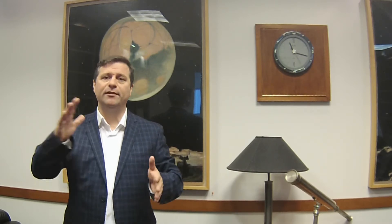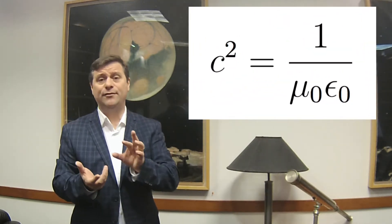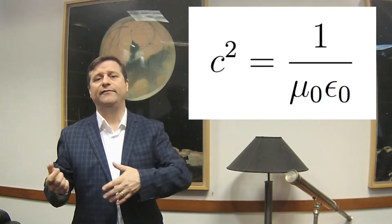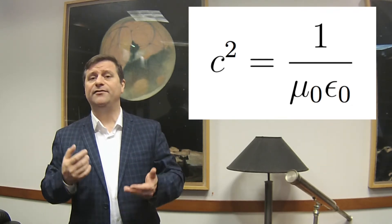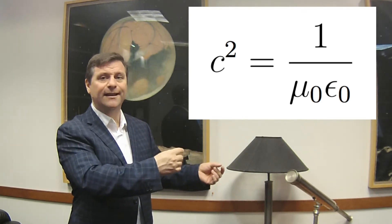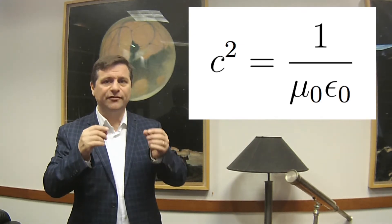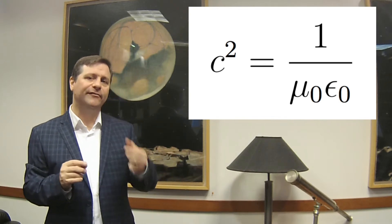These are universal constants, always the same no matter who does the experiment. When Maxwell combined these two constants about the permeability and permittivity of electric and magnetic fields in space, he got the speed with which electromagnetic disturbances pass through space. He said this was strikingly close to the speed of light as measured experimentally at the time. It's too close to be a coincidence, and it's well shown by Faraday rotation that light and electromagnetism are all one thing.